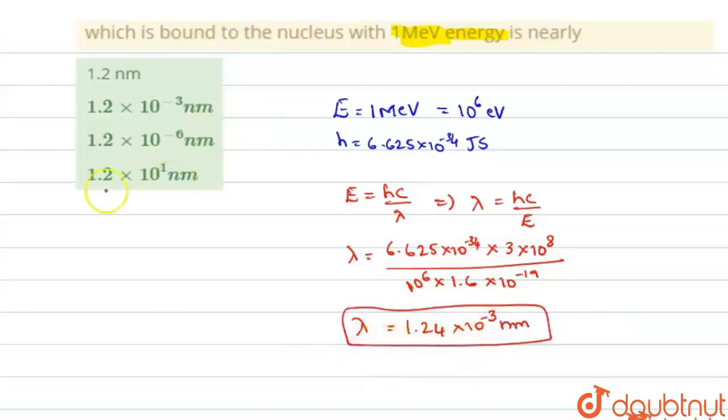Okay. So among these options, you can write it as 1.2 × 10^-3 nanometers. Option B is the right answer.